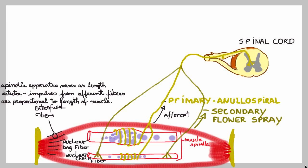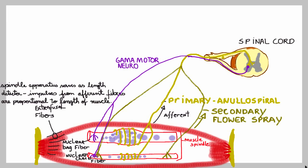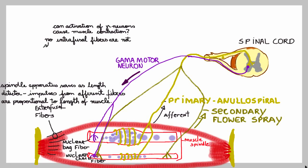There are more actors in muscle spindles. You have the gamma motor neuron, which synapses with the sensory neurons at the spinal cord and carries information through an efferent pathway towards the skeletal muscle — specifically innervating the muscle spindles, making them contract. However, can activation of gamma neurons cause muscle contraction? The answer is no, because these intrafusal fibers are not strong enough to change the entire shape of the muscle. The fibers that can do that are the extrafusal fibers.